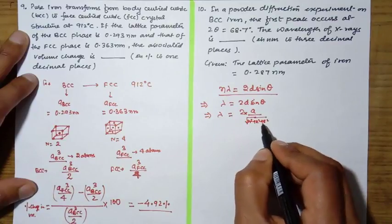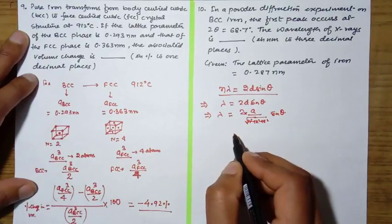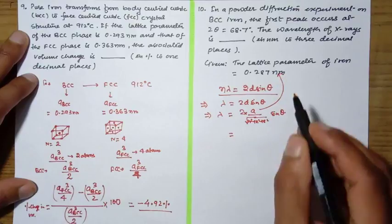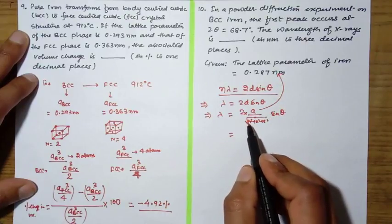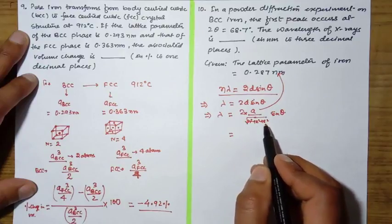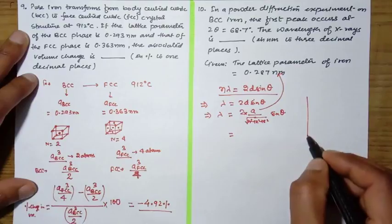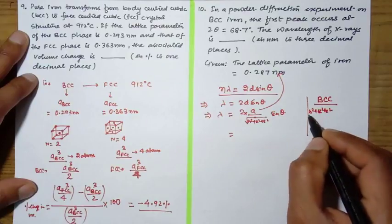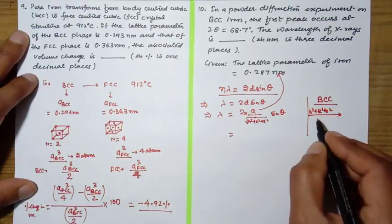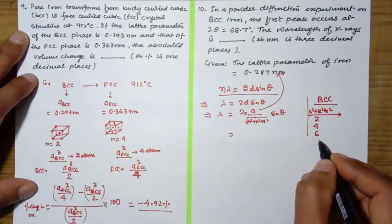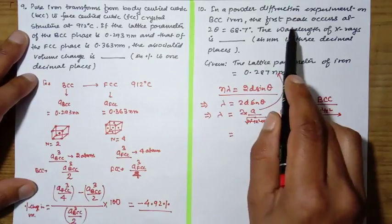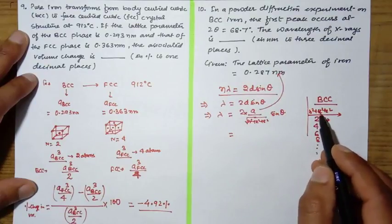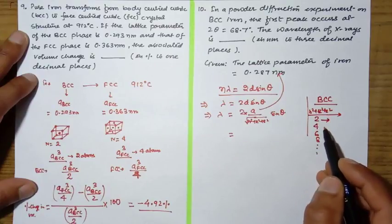Here we know the lattice parameter a = 0.287 nm. In BCC, the value of h²+k²+l² for diffraction goes like 2, 4, 6, 8 and so on. Since it is asking about the first peak, the first peak occurs at h²+k²+l² equal to 2, the second peak at 4, the third at 6, and so on. So we take the value 2.